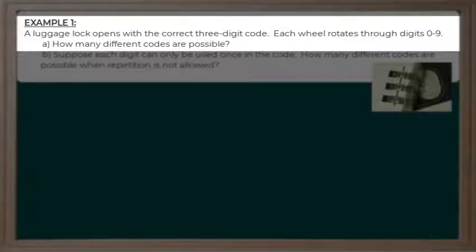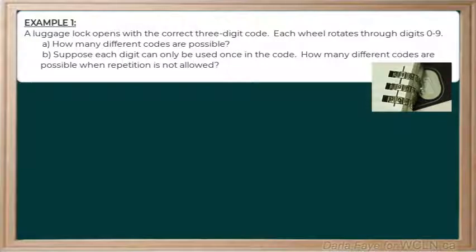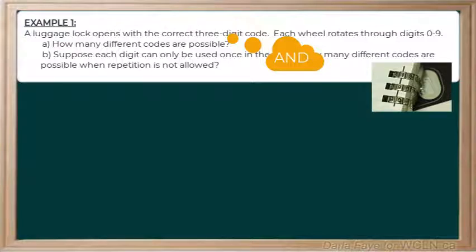Let's start by analyzing the problem. When we're asked to select a code, it is technically asking us to do three different tasks. The first task would be to select a digit for wheel 1, then we would need to select a digit for wheel 2, and finally we would select a digit for wheel 3. I've got three tasks here that are related by the word 'and,' therefore I can use the Fundamental Counting Principle.